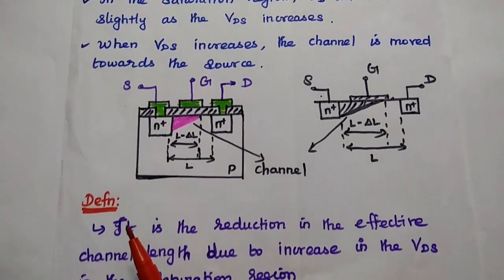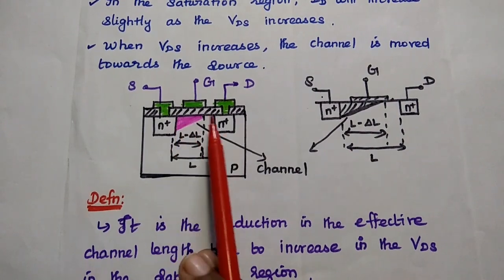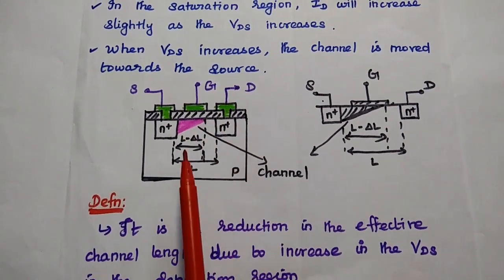Here we have source, drain, and gate. Generally, current goes from source to drain. But due to this condition, VDS increases.